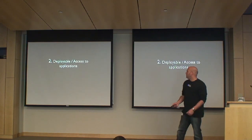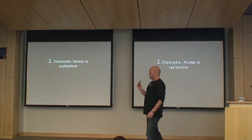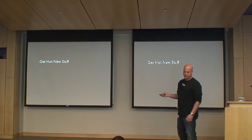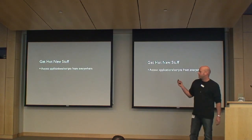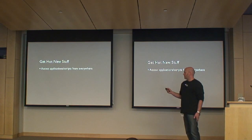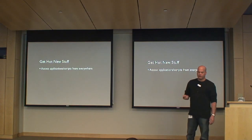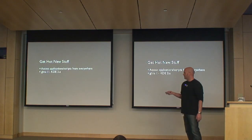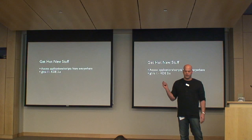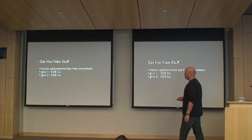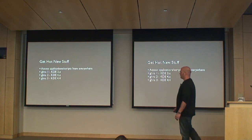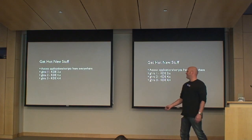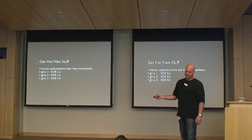Now to the second topic: deployable access to applications. I want to show some features of GetHotNewStuff. GetHotNewStuff is a framework to access applications and scripts from a community in a shared way. We had version 1 in KDE 3, version 2 in KDE 4, and now with KDE SC 4.4 we have the completely new GetHotNewStuff 3, which is a huge improvement implementing all feature requests from the last years.